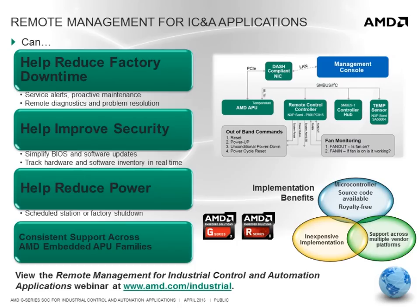Remote management can help reduce factory downtime through service alerts and remote diagnostics, help improve security through easy-to-deploy and trackable software updates, and help reduce power by powering down systems when they are not needed. AMD has created an implementation of DASH specifically for embedded platforms that removes the bloat of costly implementations while retaining the essentials of a compliant DASH implementation. The AMD G-Series SOC supports this remote management implementation. For full details, please view the Remote Management for Industrial Control and Automation Applications webinar posted at www.amd.com.